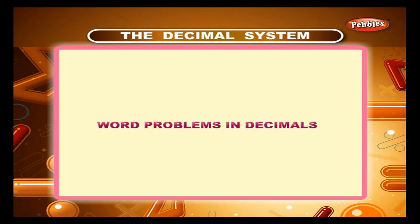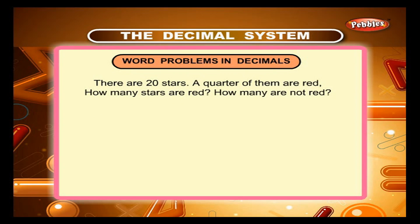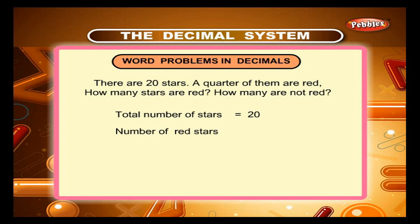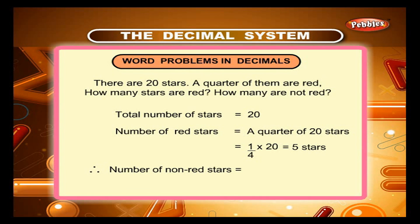Word problems in decimals. Sum 1. There are 20 stars. A quarter of them are red. How many stars are red? How many are not red? Answer: Total number of stars = 20. Number of red stars = a quarter of 20 = 1/4 × 20 = 5 stars. Therefore, number of non-red stars = 20 − 5 = 15.